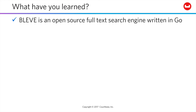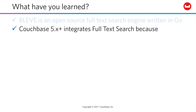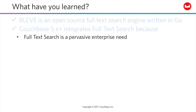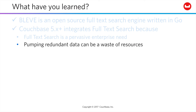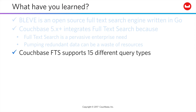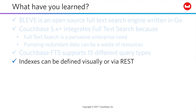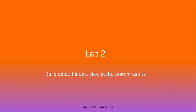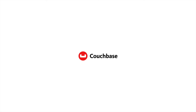So what have we learned? Bleve is an open-source full-text search engine written in Go. Couchbase 5 has integrated full-text search because it's pervasive as an enterprise need, and it's a risky waste of resources to pump redundant data around your network hoping it stays in sync. Couchbase FTS supports 15 different query types including regex and compound queries, any of which can be defined visually or via REST. In the lab, you'll build a straightforward index across the wine-search data set, watch your indexing metrics, and run your first search through the UI.